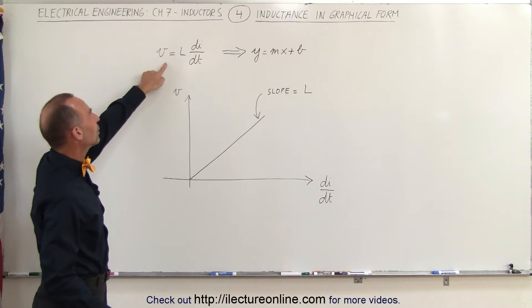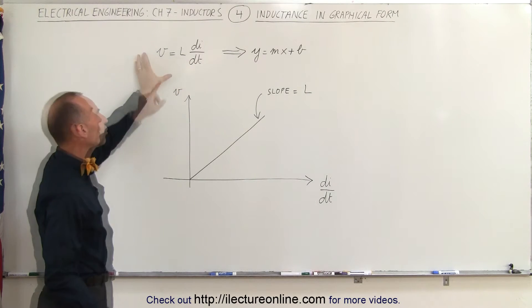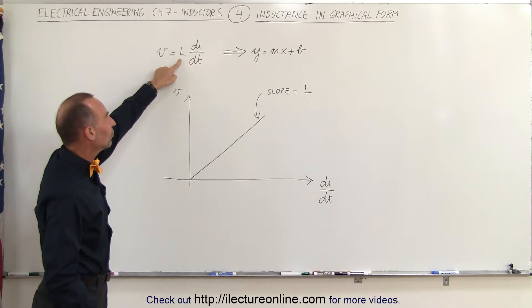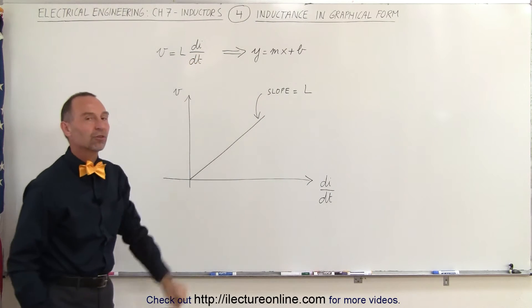Here we look at the equation V equals L times di/dt. That equates the voltage across the inductor to the inductance and the rate of change that occurs with respect to time.